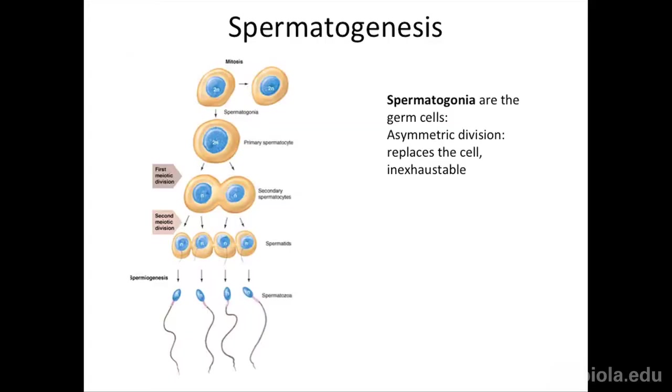Last time we talked about meiosis very generically — chromosomes divide this way — and we weren't specific about the types of cells we were making. So I want to go into spermatogenesis first, and then contrast that with how eggs are made in oogenesis. Spermatogenesis starts with cells that have been set aside to become sperm cells. We call them germ cells — cells set aside to become either eggs or sperm.